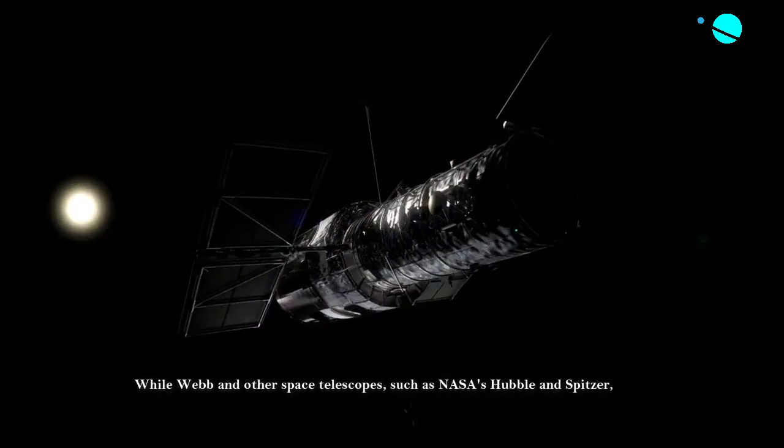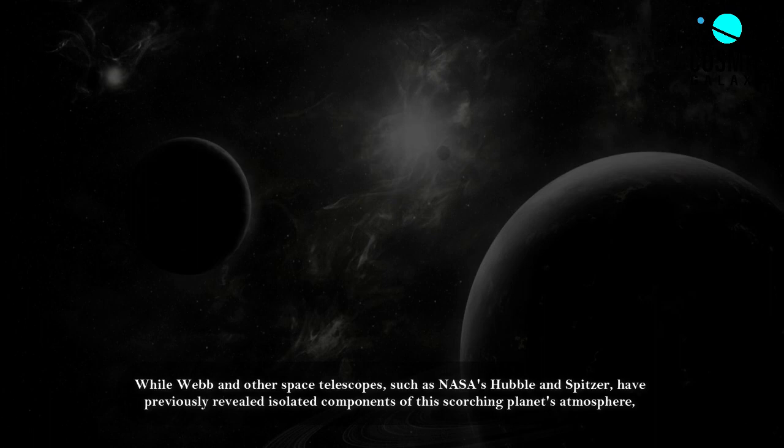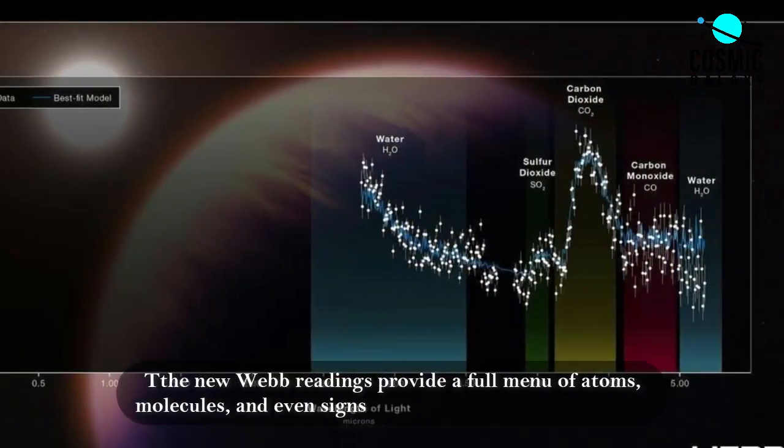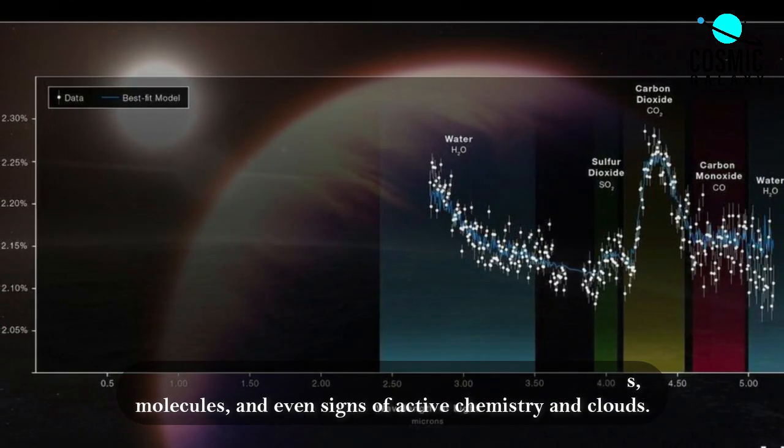While Webb and other space telescopes, such as NASA's Hubble and Spitzer, have previously revealed isolated components of the scorching planet's atmosphere, the new Webb readings provide a full menu of atoms, molecules, and even signs of active chemistry in clouds.